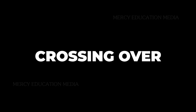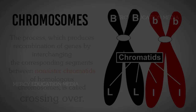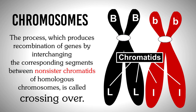What do you mean by crossing over? The process which produces the recombination of genes by interchanging the corresponding segments between the non-sister chromatids of homologous chromosomes is called crossing over.